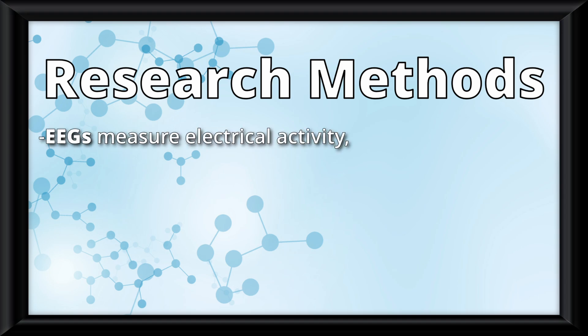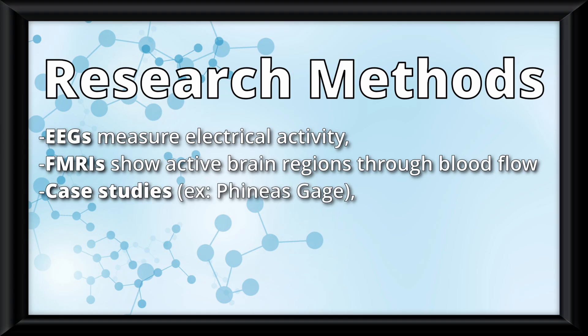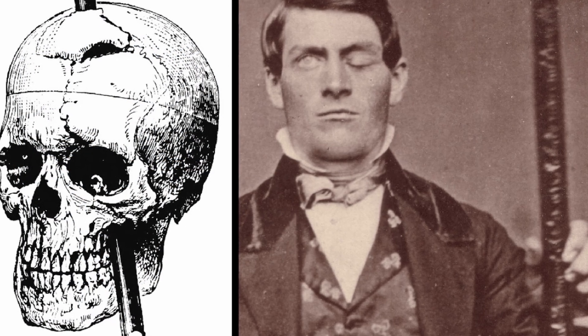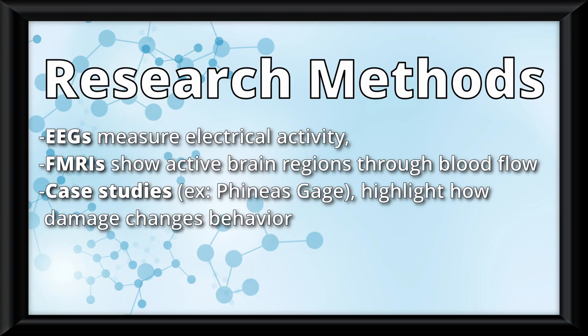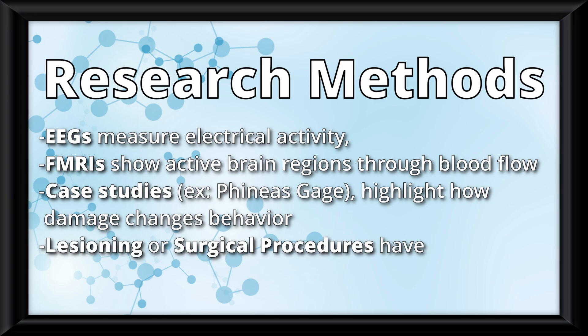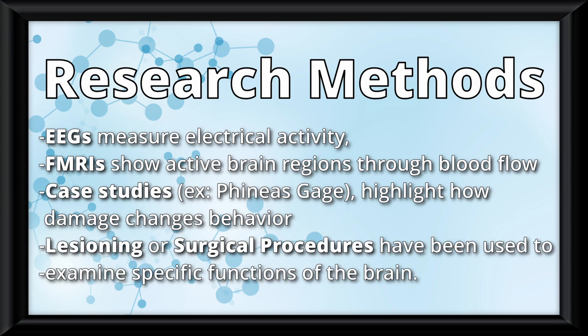EEGs measure electrical activity. FMRIs show active brain regions through blood flow. Case studies like Phineas Gage, or better known as the man with a metal rod in his head, highlight how damage changes behavior. And finally, lesioning or surgical procedures have been used to examine specific functions of the brain.